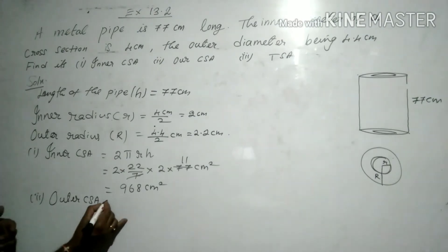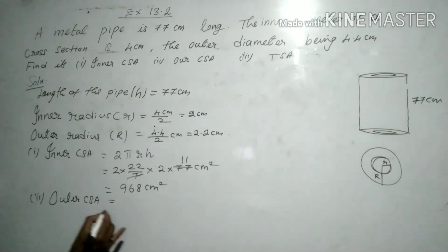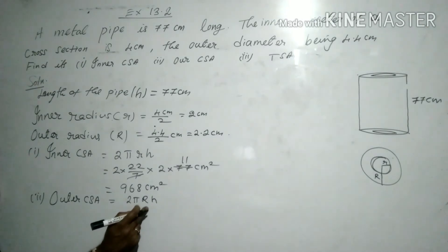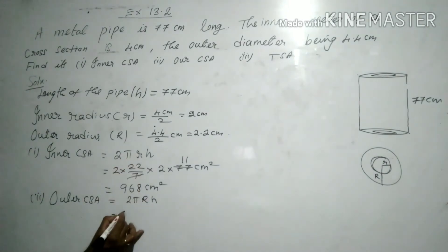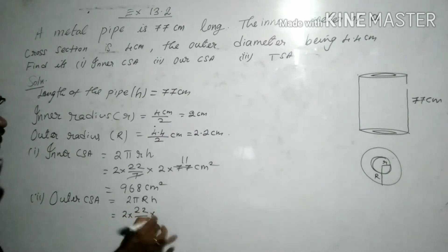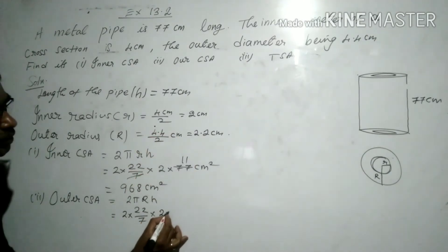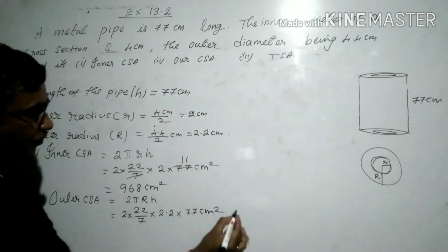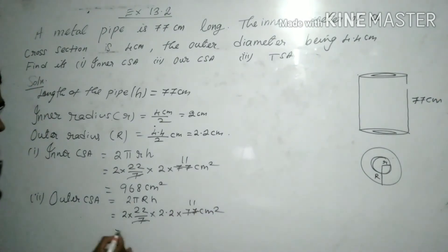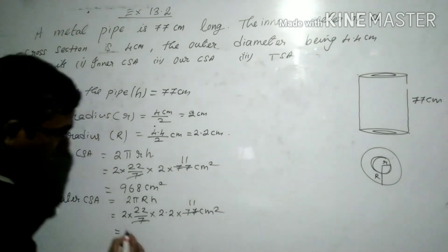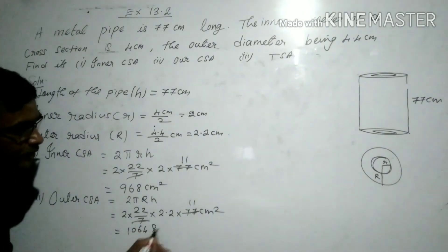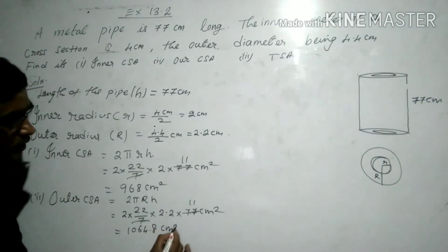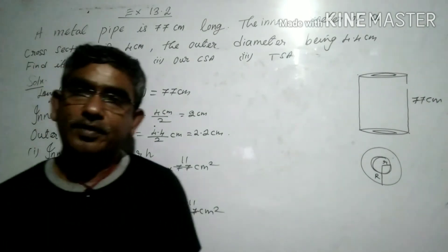Outer CSA = 2πRh, where R is the outer radius. So: 2 × (22/7) × 2.2 × 77. On canceling 7 with 77 we get 11, so multiplying all values gives 1064.8 centimeters squared. There is one decimal place, so the outer CSA = 1064.8 centimeters squared.